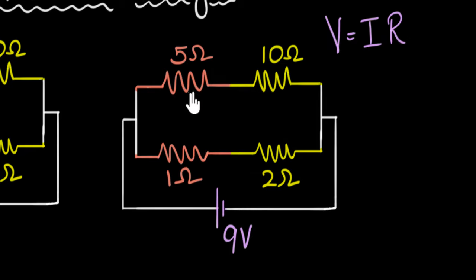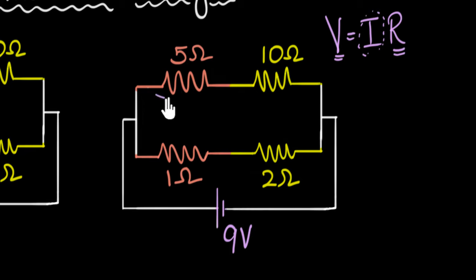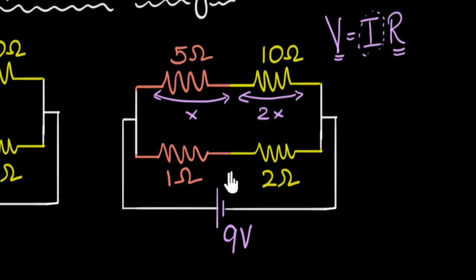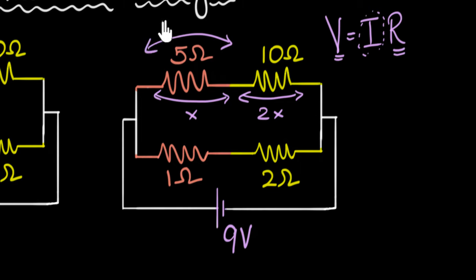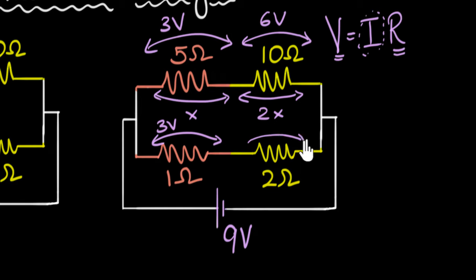If two resistors have the same current, the voltage must be proportional to the resistance. So if the ratio of resistance here is one is to two, the ratio of voltage must also be one is to two — the voltage here is X, and the voltage here must be two X. The same applies to the other branch. Nine volts gets divided in the ratio one is to two, giving three and six. Similarly, the other branch is also divided in the ratio one is to two, giving three and six.